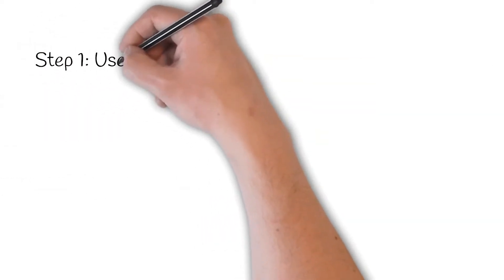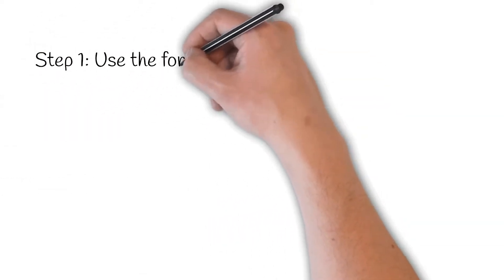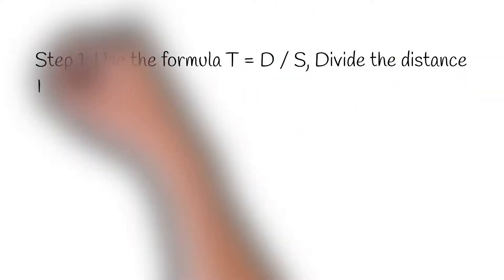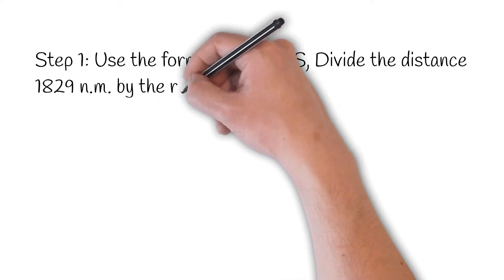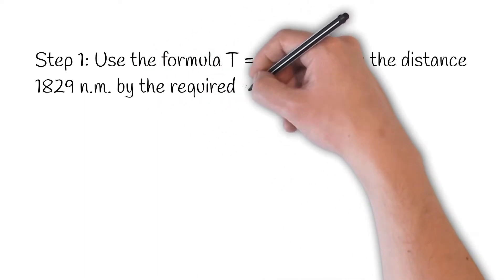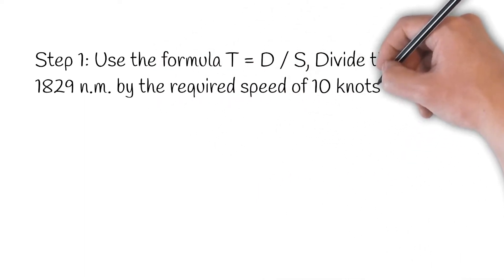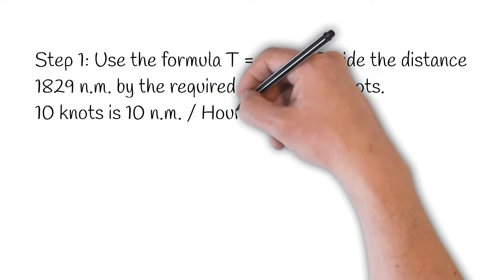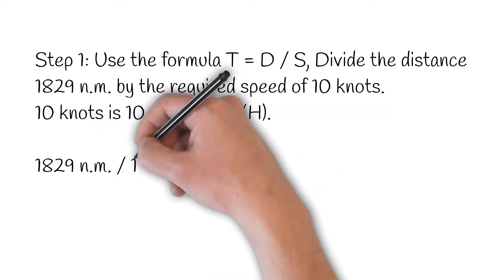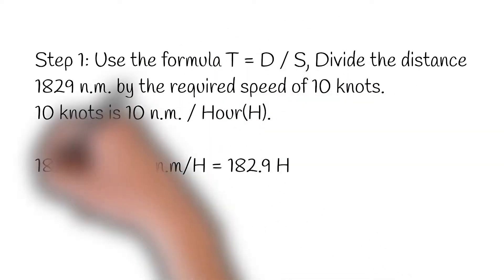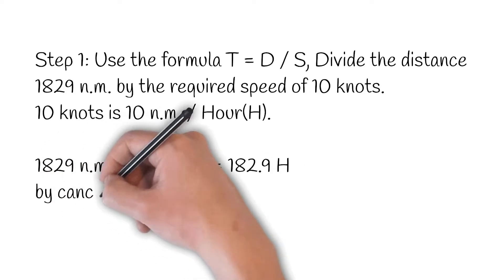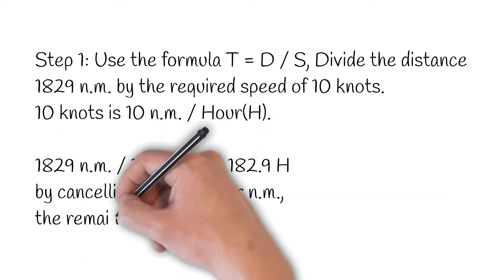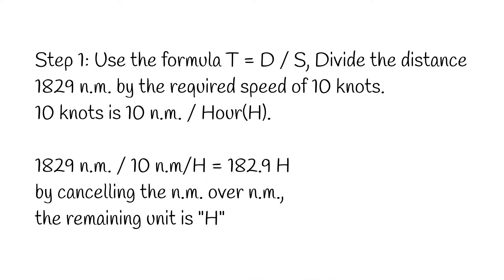Step 1: Use the formula — time is equal to distance divided by speed. Divide the distance of 1,829 nautical miles by the required speed of 10 knots (10 nautical miles per hour). 1,829 nautical miles divided by 10 nautical miles per hour equals 182.9 hours. By canceling nautical miles over nautical miles, the remaining unit is hours.